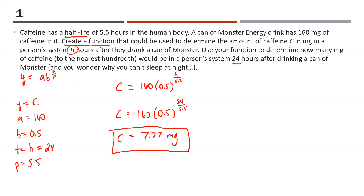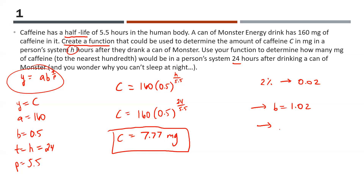It's just a matter of using the generic exponential growth or decay formula. This is a decay function because it's a half-life. Remember, if this were a population growth or decay question with a percentage rate — say 2%, which is 0.02 — if it's growing, B equals 1.02; if it's decaying, B equals 0.98. We never use the raw percentage as our B value in population growth or decay questions.